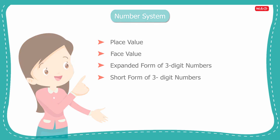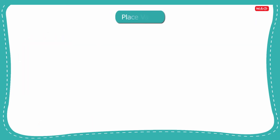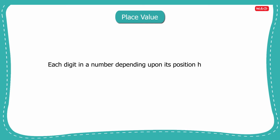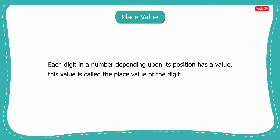Let us first learn about place value. Each digit in a number, depending upon its position, has a value. This value is called the place value of the digit.